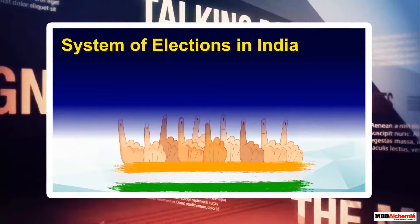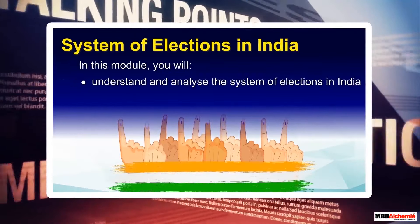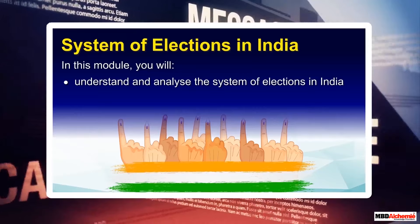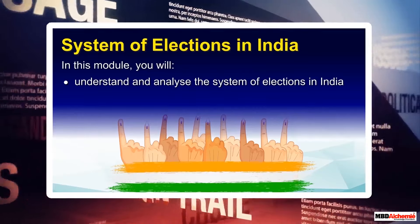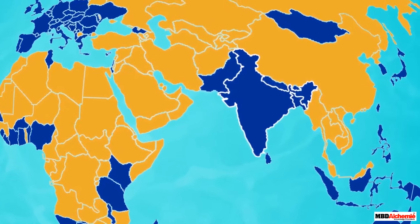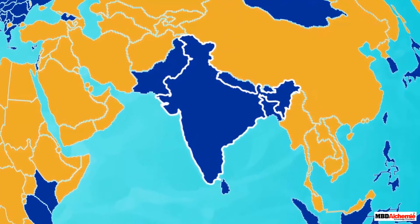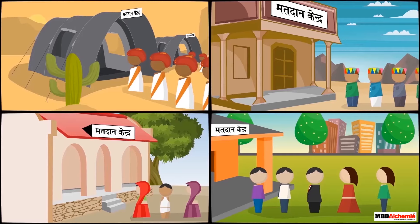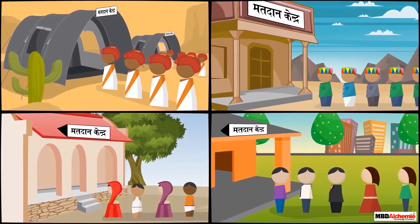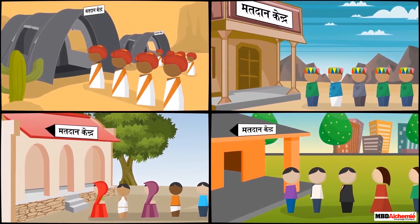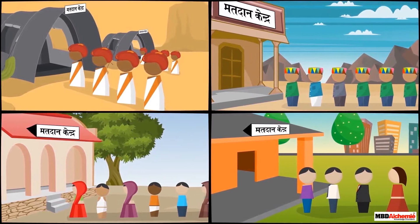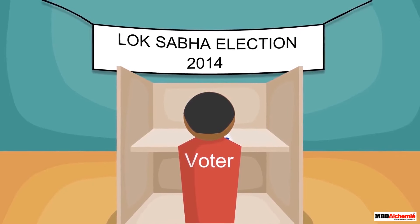In this module you will understand and analyze the system of elections in India. With a population of over 1.21 billion, India is the largest democracy in the world, and evidently the largest democratic electoral exercise in the world is also conducted here. Let us find out how it is done.